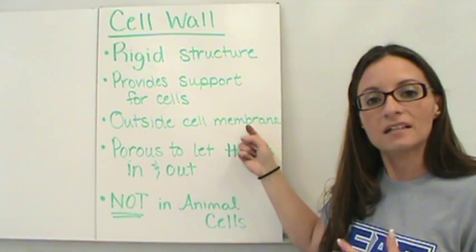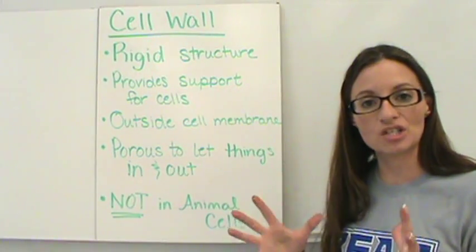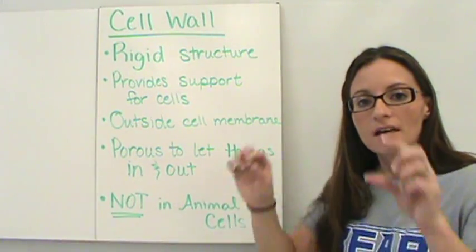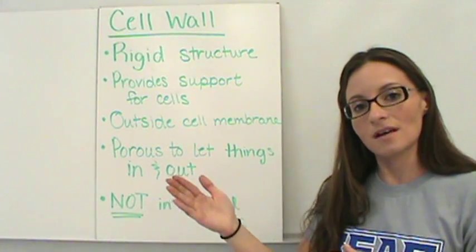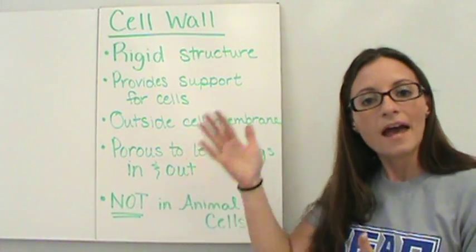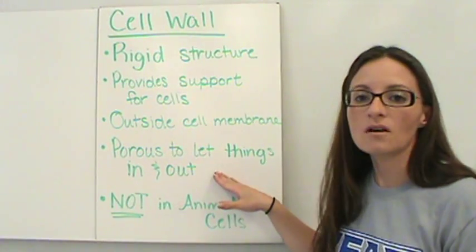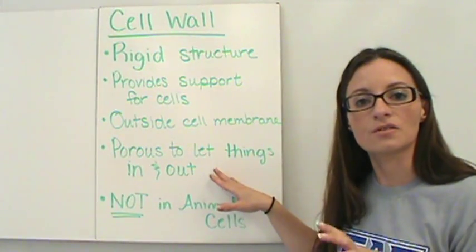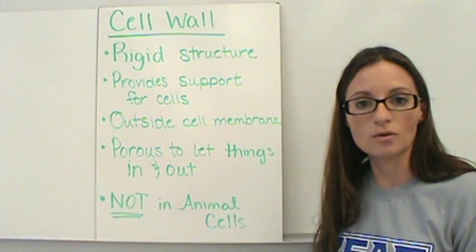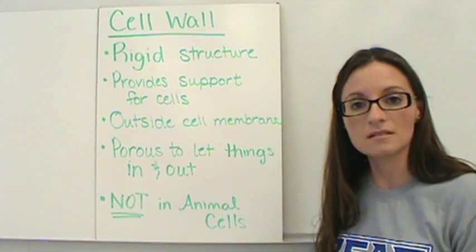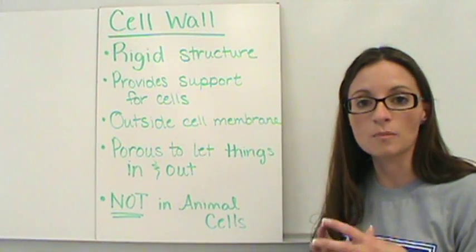The cell wall is located on the outside of the cell membrane. So if you see a picture or a diagram of a cell that has two structures on the outside, the outside one is going to be the cell wall and the inside one is going to be the cell membrane. The cell wall is also very porous. The purpose of the cell wall is not to control what goes in and out of the cell — that's the cell membrane. The purpose of the cell wall is just to provide support.